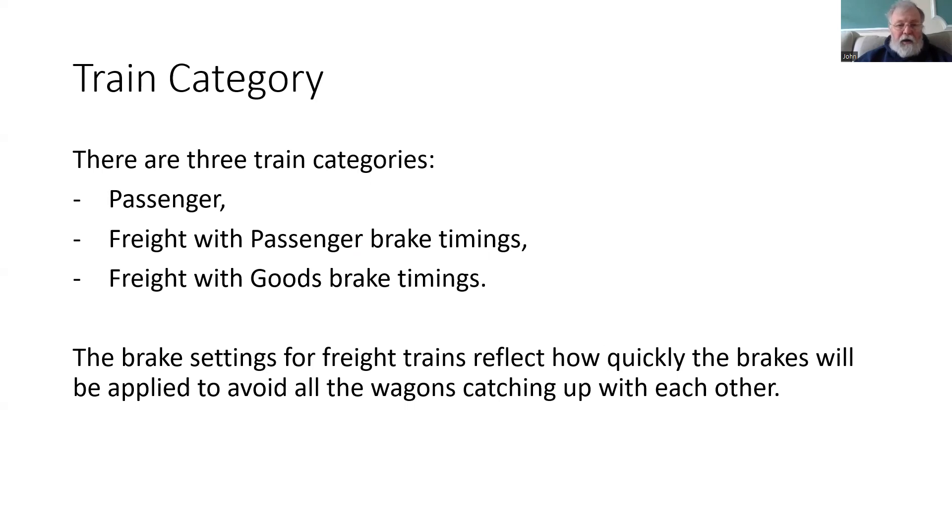By adjusting how quickly the air is allowed into the brake pipe, then the performance of the brakes down the train can be managed to avoid the noise, the clatter and the potential for buffer lock. And that is what the two timings reflect.